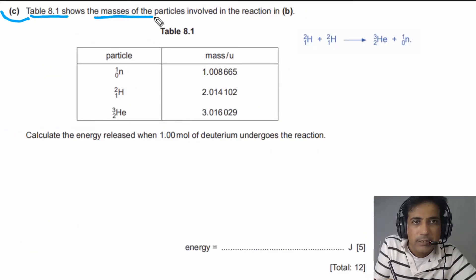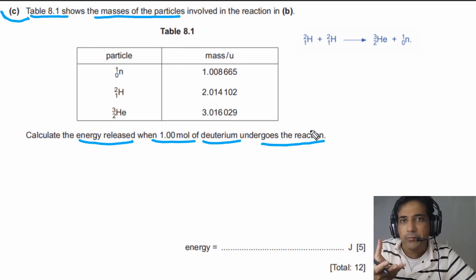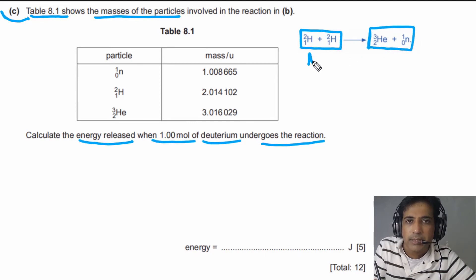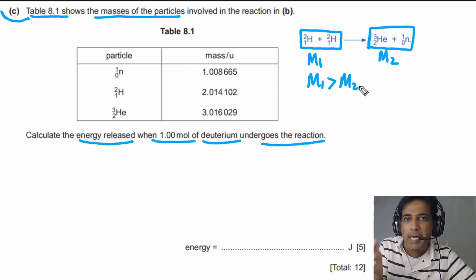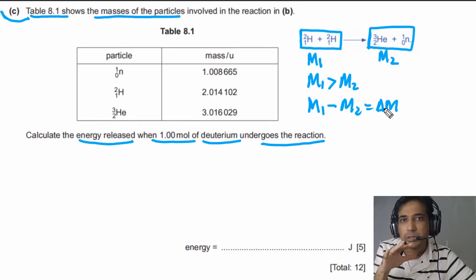For part C, masses of the particles are given in Table 8.1, and we need to calculate the energy released when one mole of deuterium undergoes this nuclear reaction. Energy is released only when the mass of the reactants is greater than the mass of the products. Let M1 be mass of reactants and M2 be mass of products; M1 must be greater than M2, and the mass difference is converted into energy.